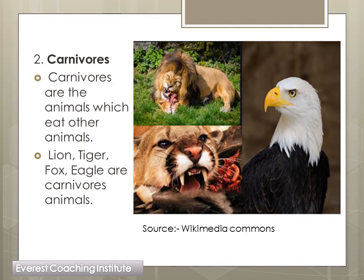Now the second category - carnivores. Carnivores are the animals that eat other animals. These animals only eat other animals; they do not eat plant products. They only eat flesh. As I discussed, if you put roti or chapati in front of a dog along with flesh, the dog will happily eat the flesh. Carnivores are only flesh-eating animals. Examples you can see in the picture: lion, tiger, eagle, fox - these are all carnivore animals.